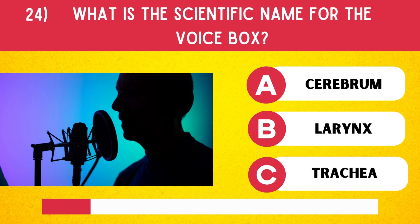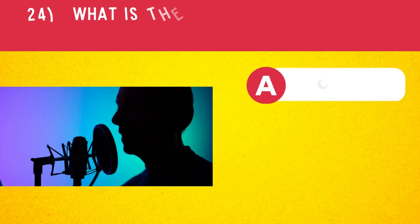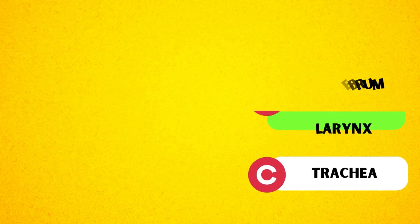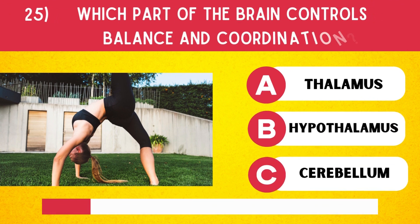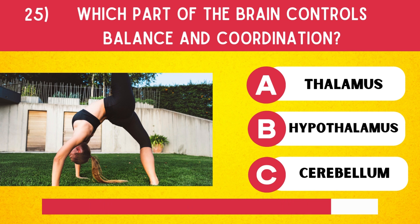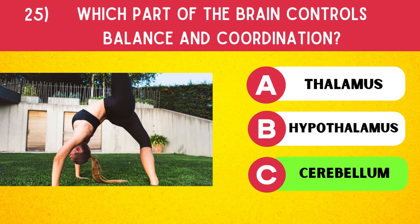What is the scientific name for the voice box? Larynx. Which part of the brain controls balance and coordination? Cerebellum.